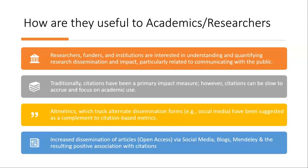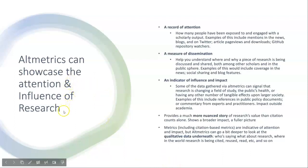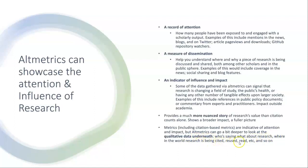The more available and visible your work is, the greater the chance of readership and therefore citations. Altmetrics can showcase the attention and influence of your research — it's a record of attention, how many people have been exposed to and engaged with your work, and a measure of dissemination, how broadly your work has been discussed and shared. Some data gathered via Altmetrics can signal that research is changing a field of study, public health, or having tangible effects on wider society. This is important and something you can show when applying for funding, an academic position, or for use in your CV. Altmetrics also allow you to go deeper into qualitative data — who's saying what about your research and where in the world it has been carried out, reused, and read.